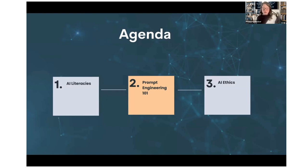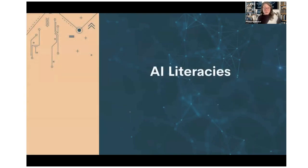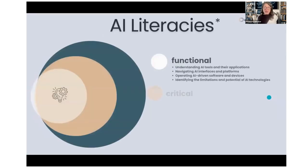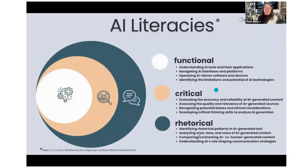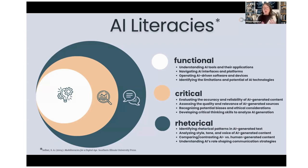The main focus is prompt engineering, and then I'll talk about ethics at the end. We talk about AI literacies — plural — which comes from Selber's 2004 framework called multi-literacies for a digital age. Within that framework there are three types of literacy. The first is functional literacy: basic understanding of the tools, the applications, the use cases, how to navigate their interfaces and platforms.